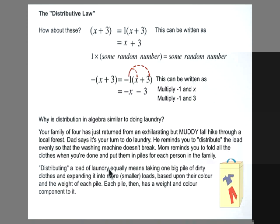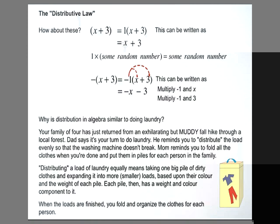So distributing a load of laundry equally means taking 1 big pile of dirty clothes and expanding it into more or smaller loads based upon their color and weight of each pile. Each pile then has a weight and color component to it. When the loads are finished, you fold and organize the clothes for each person.